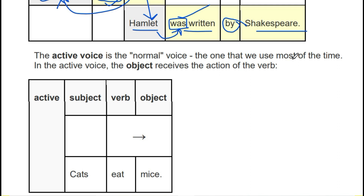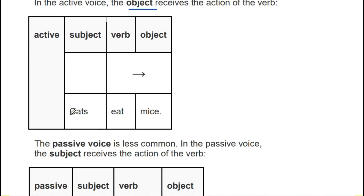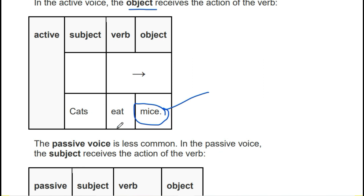The active voice is the normal voice — the one that we must use most of the time. In the active voice, the object receives the action of the verb. For example, 'Cats eat mice.' Cats is our doer, the subject. What does it do? It eats mice. So who is receiving the action? The object — which is 'mice.'